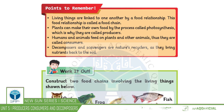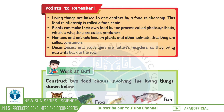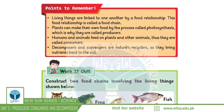Herbivores eat only plants. Carnivores eat flesh — meat. Omnivores eat both plants and flesh. Human beings are omnivores.